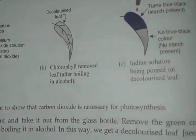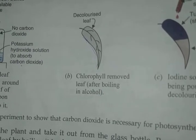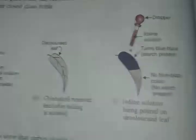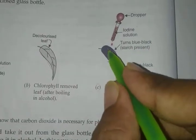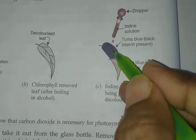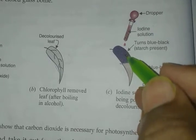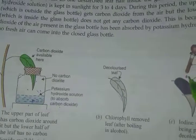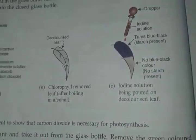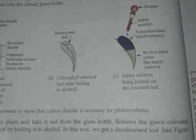After three to four days, pluck out this leaf and perform the same experiment: boil it in water, then boil it in alcohol to remove the chlorophyll, then wash it with water. After that, apply iodine. You will see that half of the leaf turns blue-black and the other half shows no change. The blue-black half had starch because photosynthesis carried out there — it had access to carbon dioxide. The other half had no carbon dioxide, so no photosynthesis occurred. This confirms that without carbon dioxide, plants cannot perform photosynthesis.